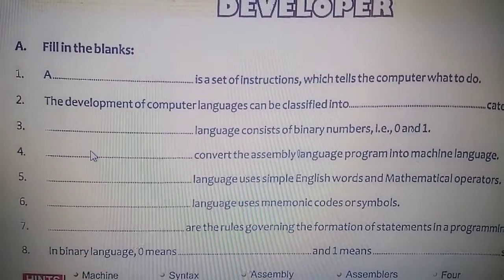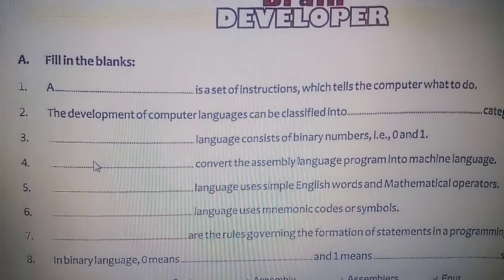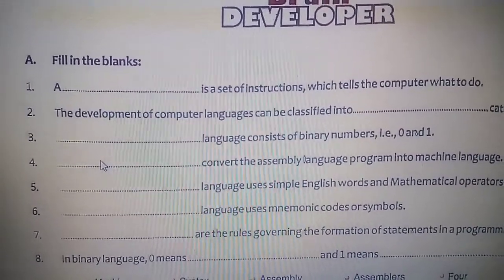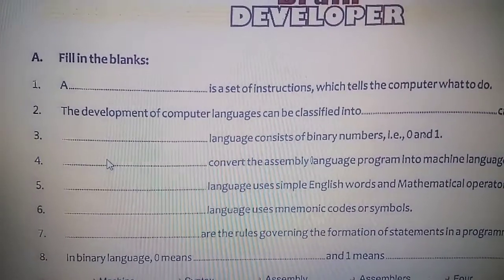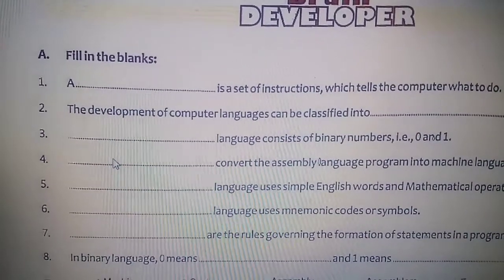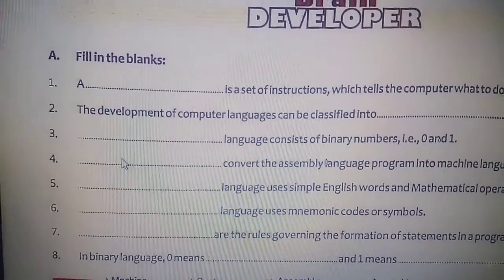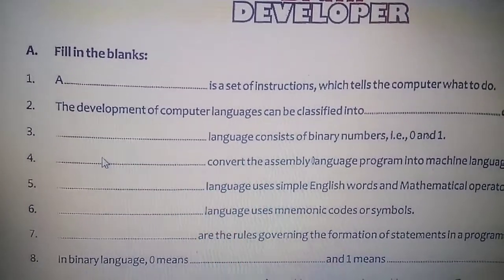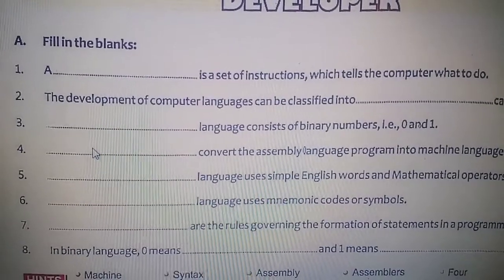Sixth: dash language uses mnemonic codes or symbols. Mnemonic codes means for addition it uses ADD, for multiplication MUL, for subtraction SUB. Which language uses that? That was the second language — assembly language. So the answer is assembly language uses mnemonic codes or symbols.